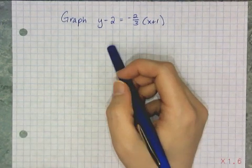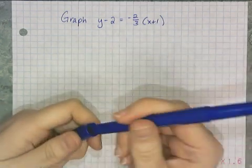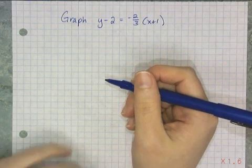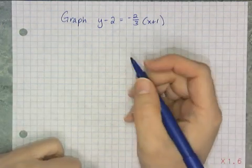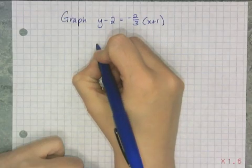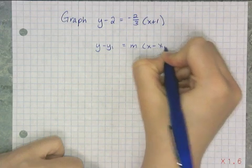So remember, this equation is called point-slope form because inside the equation is a point and a slope, and I don't have to calculate it, I just have to be able to pull the information from the equation. So remember that point-slope is y minus y1 equals m times x minus x1.